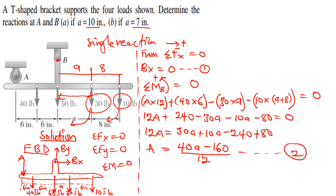Note that By and Bx were not included in the moment equation about B because they pass through the moment center, making their moment zero. Now we also take moment about point A, with anti-clockwise positive, equal to zero.